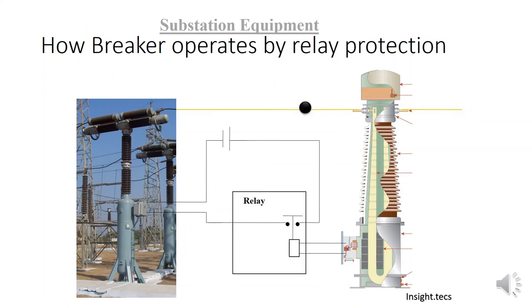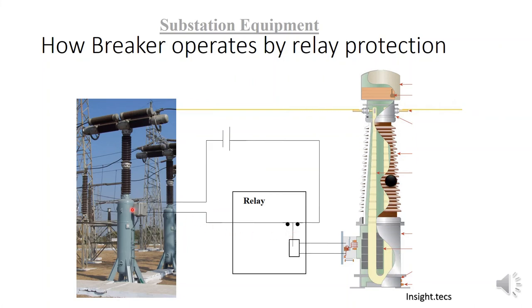Whenever a fault occurs, a high amount of current flows through the CT, which results in more current in its secondary terminals. Due to this, the relay gets energized, the circuit closes, and the trip command is given to the circuit breaker. Due to the current flowing, the relay operates and the trip command is sent to the circuit breaker, so the breaker gets tripped.